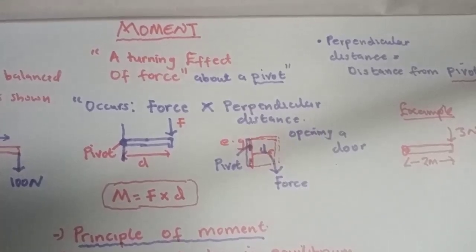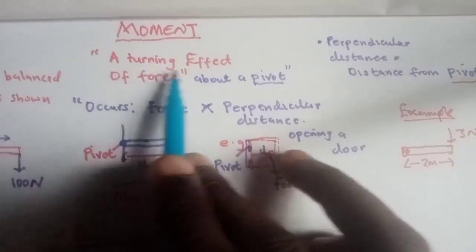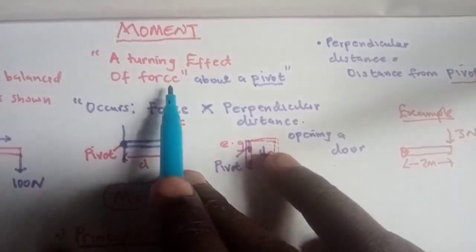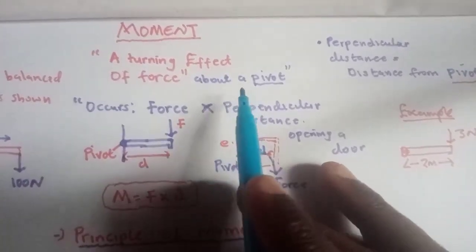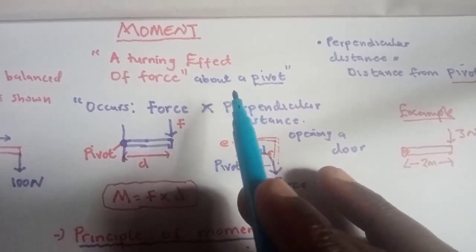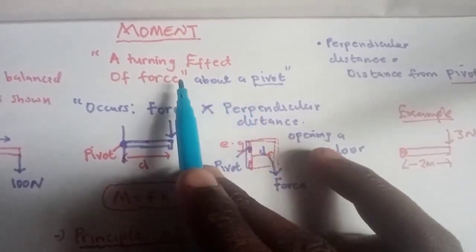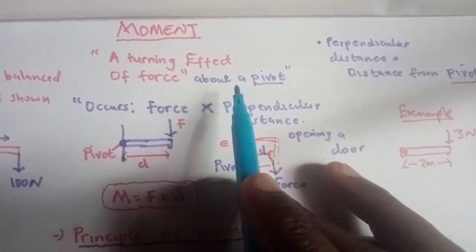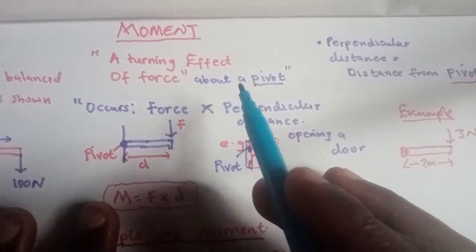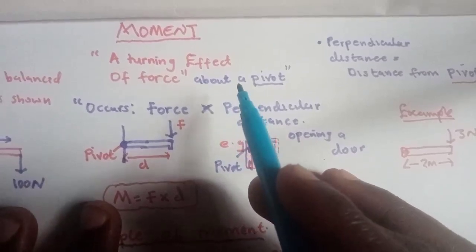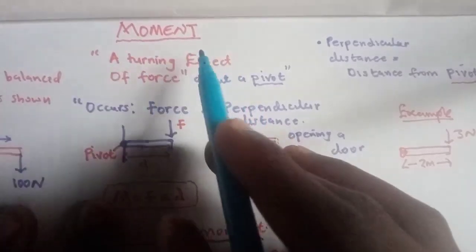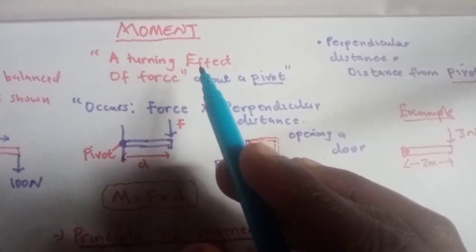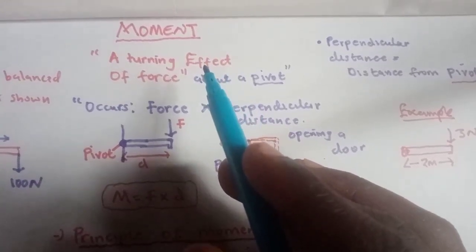A moment is simply a turning effect of a force about a pivot. Anything that causes a turning effect — there are many examples.